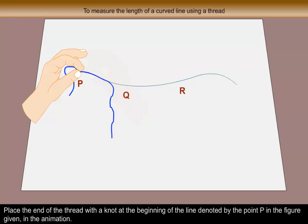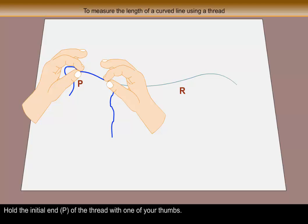Place the end of the thread with the knot at the beginning of the line denoted by the point P in the figure given in the animation. Hold the initial end P of the thread with one of your thumbs.